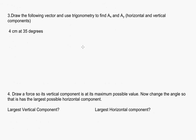So let's move on to question 3. Question 3 says draw the following vector and use trigonometry to find ax and ay, horizontal and vertical components, using 4 centimeters at 35 degrees. Let's go back and look at this. When you think horizontal, you should immediately conclude that I'm talking about the x. And when you see vertical, you should think I'm talking about the y.